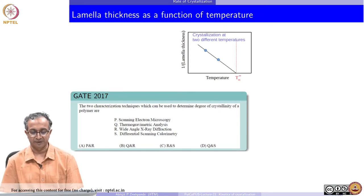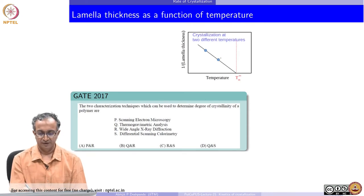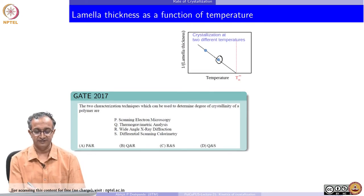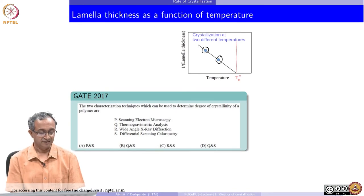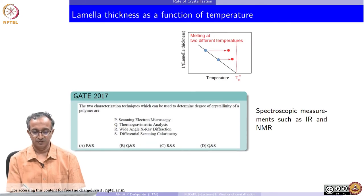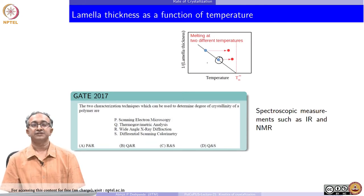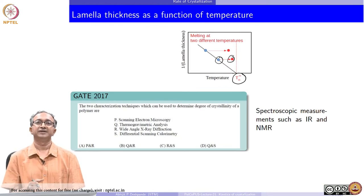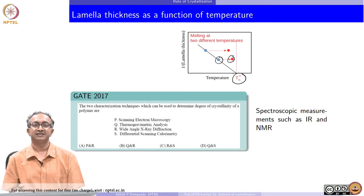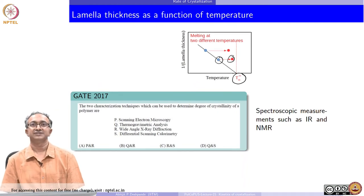Crystallization at two different temperatures gives crystals of different thickness — microstructurally the two crystals are different. If we heat and melt them again, melting will occur at different temperatures. Crystals formed at a higher temperature will melt at a slightly higher temperature. Only if crystallization is done exceedingly slowly can we approach the equilibrium Tm infinity — in most practical cases, there is a range of temperatures over which crystallization and melting take place.